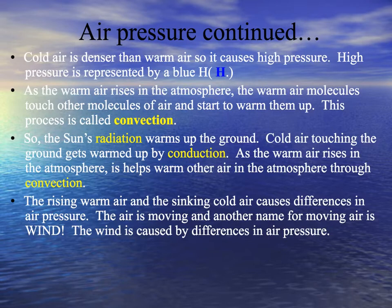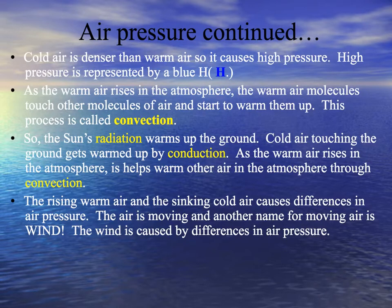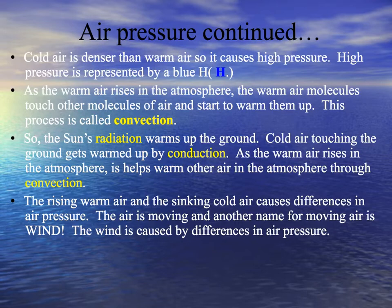As the warm air rises in the atmosphere, warm air molecules touch other molecules of air and start to warm them up. This process is called convection. So the sun's radiation warms up the ground. Cold air touches the ground and gets warmed up by conduction. As the warm air rises in the atmosphere, it helps warm other air through convection. Convection is the circulation of heat through a liquid or a gas. Since the atmosphere is a gas, we have convection. Rising warm air and sinking cold air causes differences in air pressure.